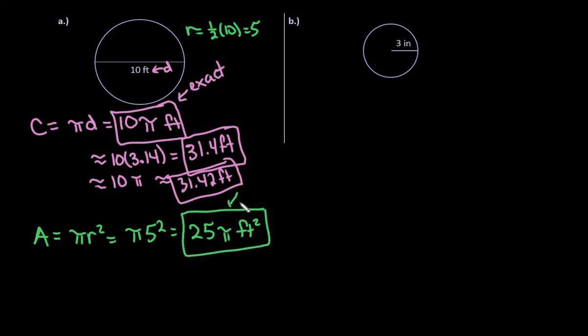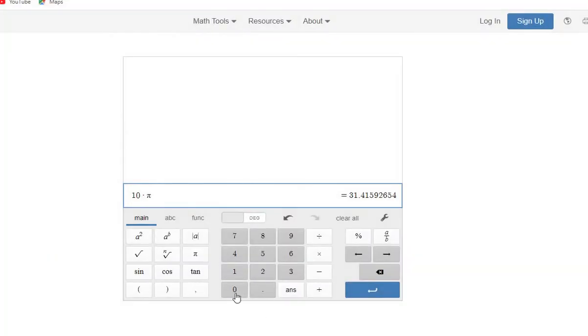So again, if they want an exact answer, then you would just leave it like this. Like I said, if you were trying to do this in your calculator, you can either do 25 times the pi button, or you can do 25 times 3.14.